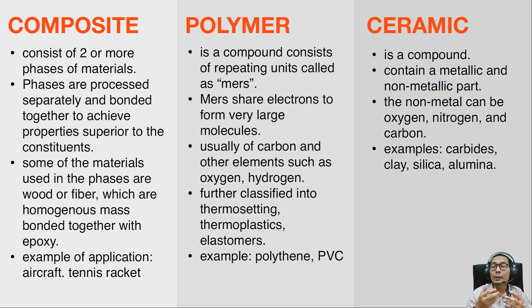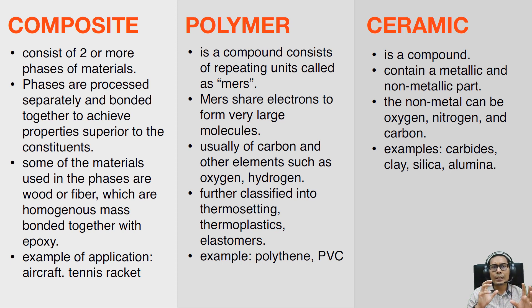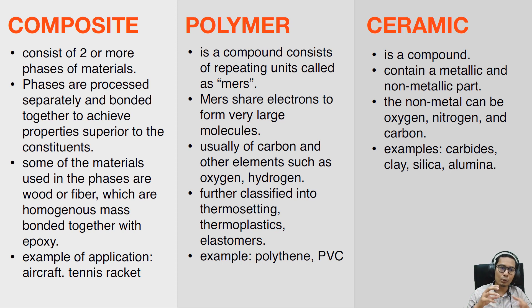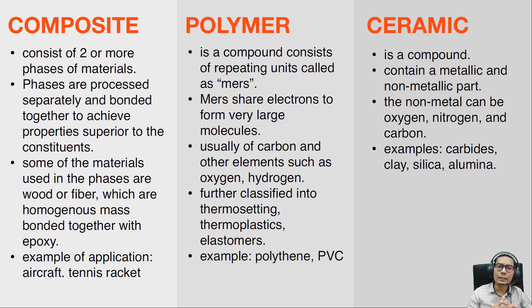Composite materials consist of two or more phases of materials which are processed separately and bonded together to achieve properties superior to the individual constituents. Some composite materials use wood or fiber as a homogenous mass bonded together with epoxy as the bonding element. Examples of composite applications include aircraft structures and tennis rackets.